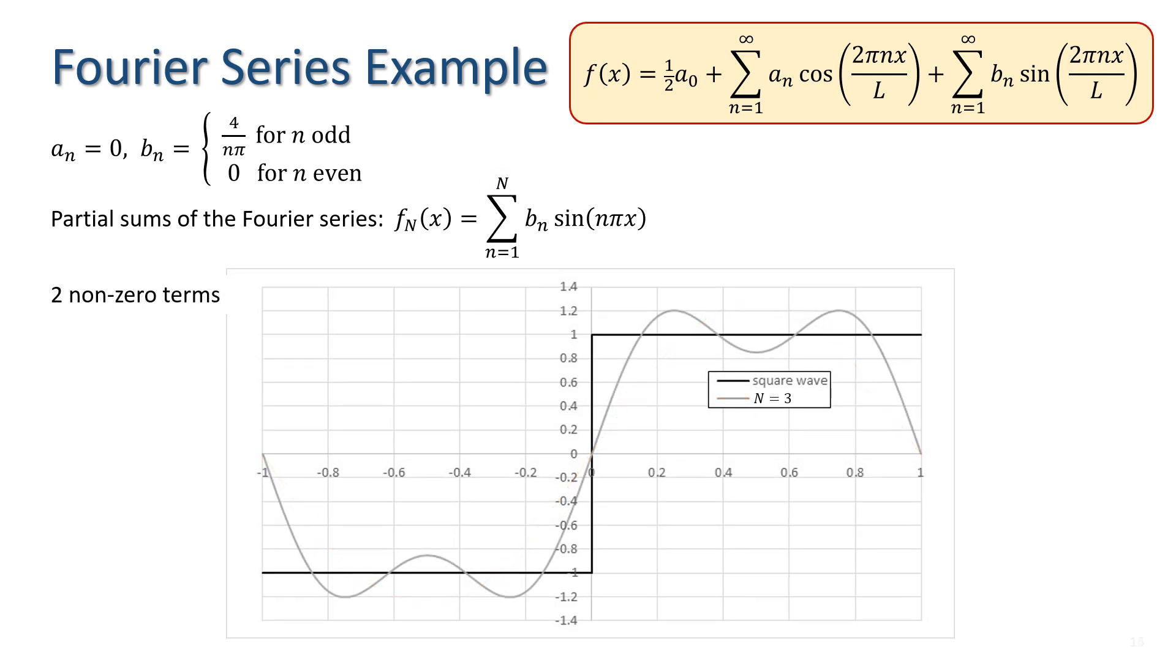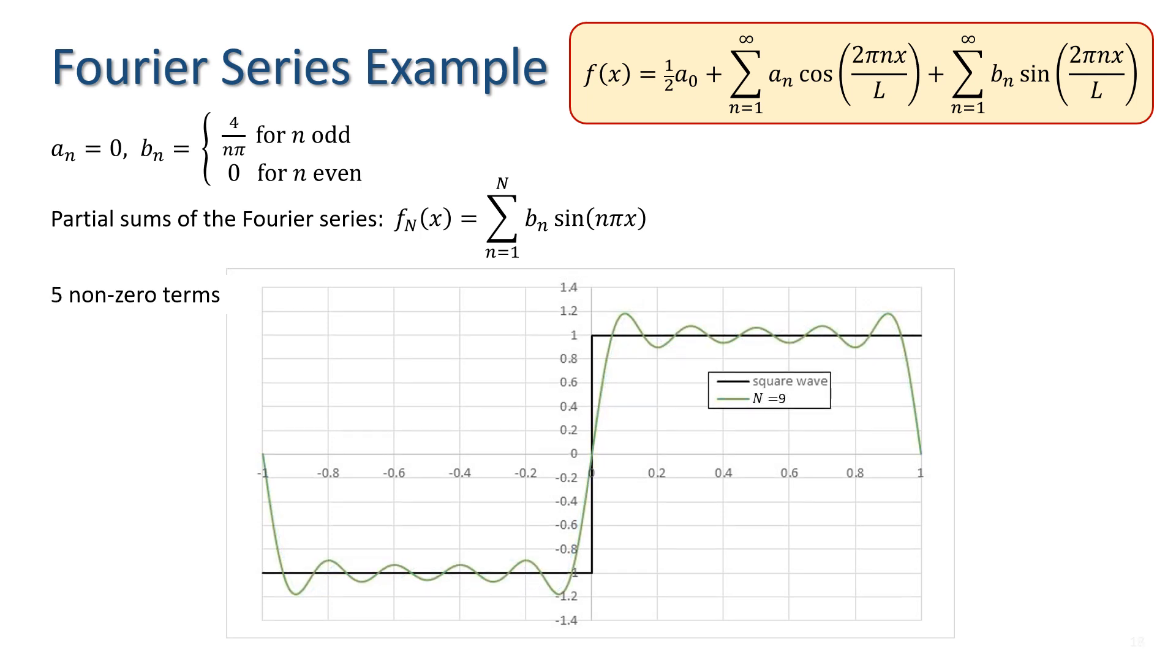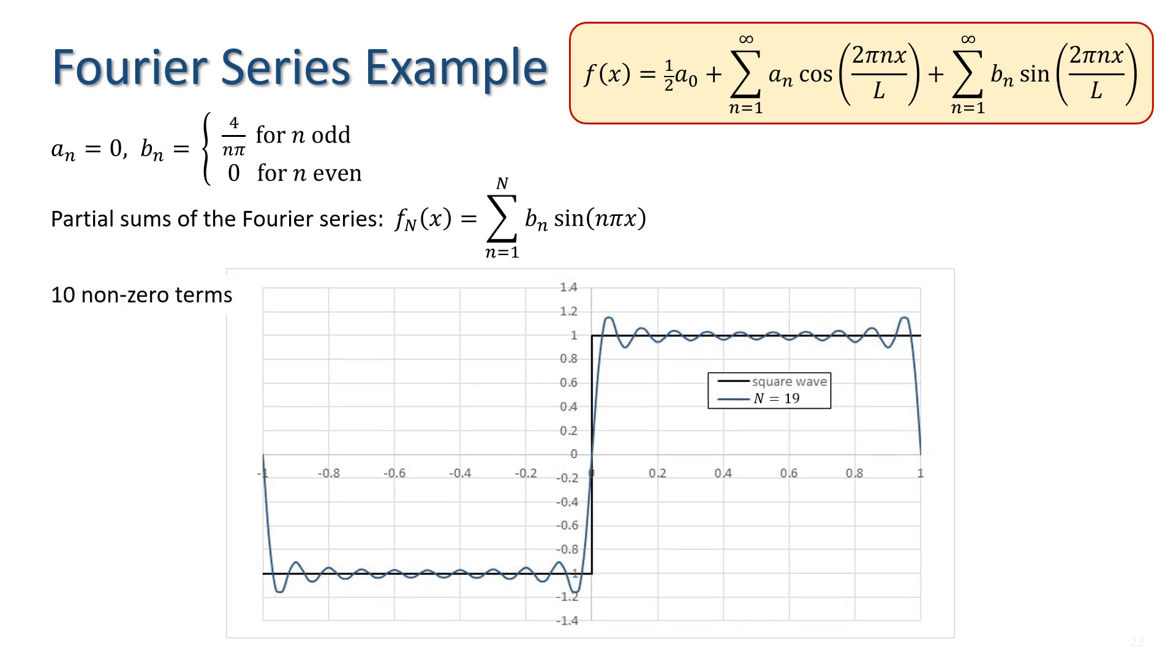Taking two non-zero terms, which corresponds to capital N equals 3, we have this result for the sum. Three non-zero terms corresponding to capital N equals 5, 4, 5, 6, 7, 8, 9, and 10.